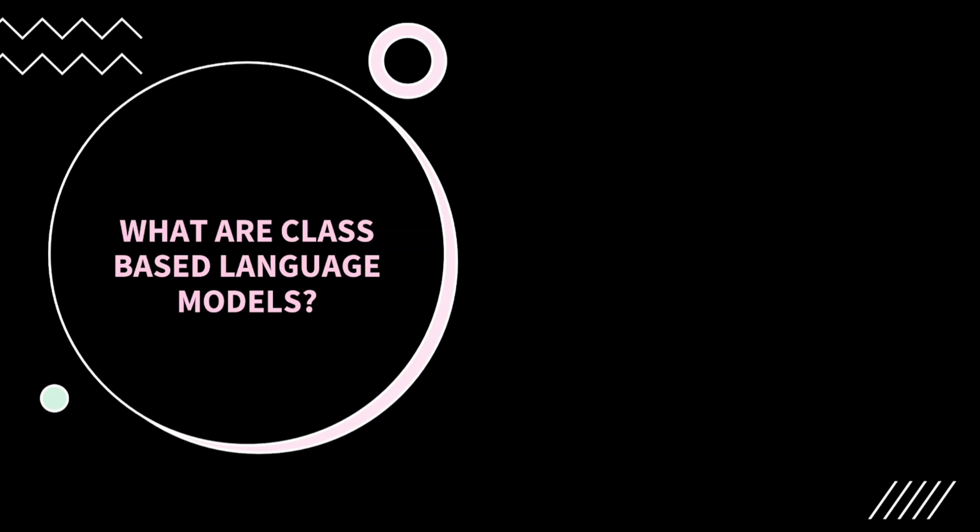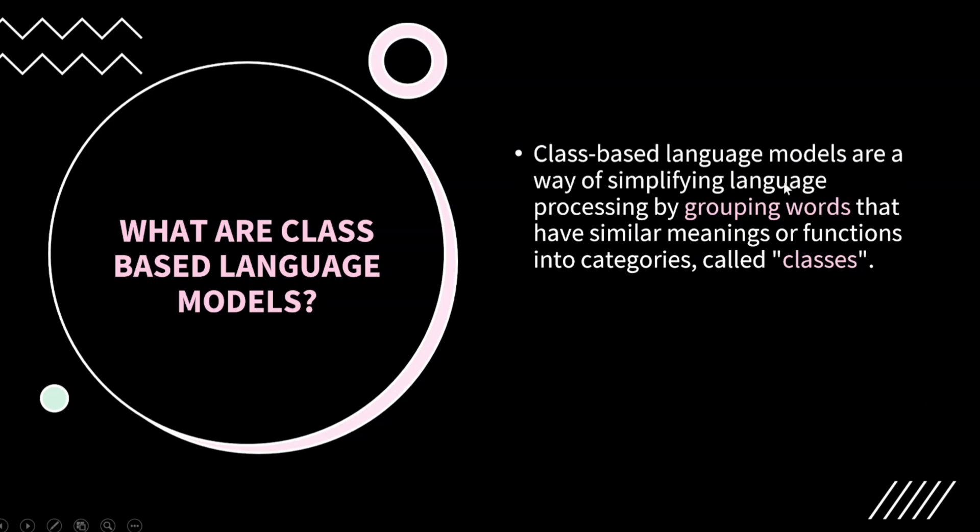Now let's connect this example to understand the class-based language model. If you ask a computer to predict the next word in a given sentence, it will consider all the possible words in a huge vocabulary — just like picking a ball from that big black box. It will consider all possible words and select only one. But how do you make the computer's task easier? Just like grouping similar balls together, you group similar words together.